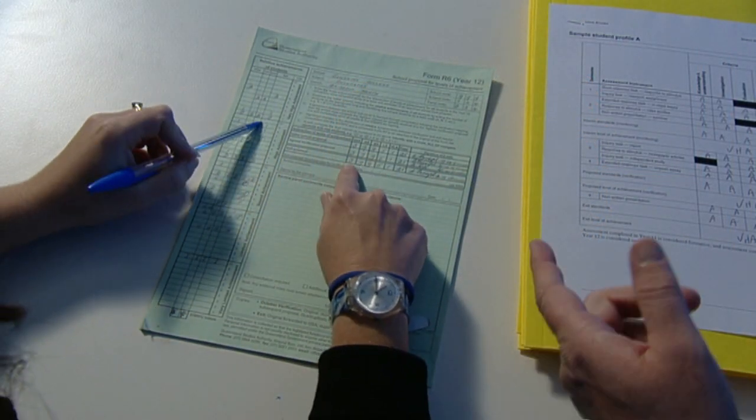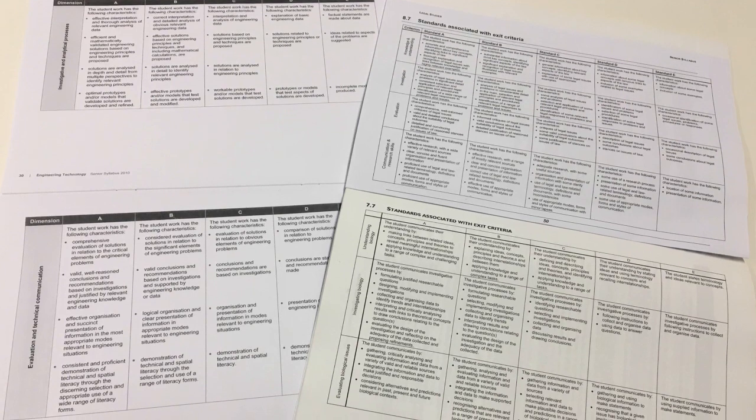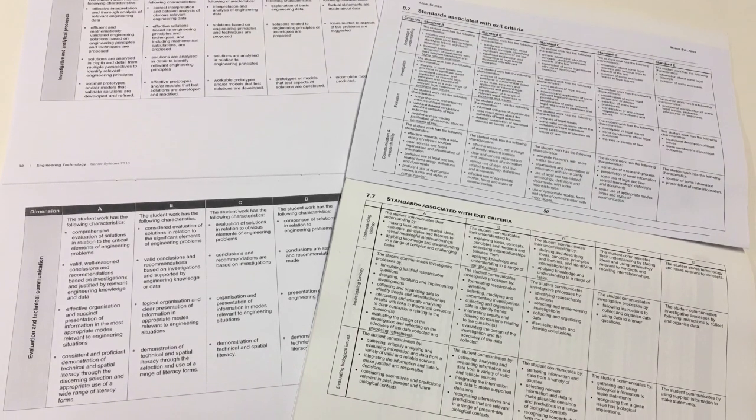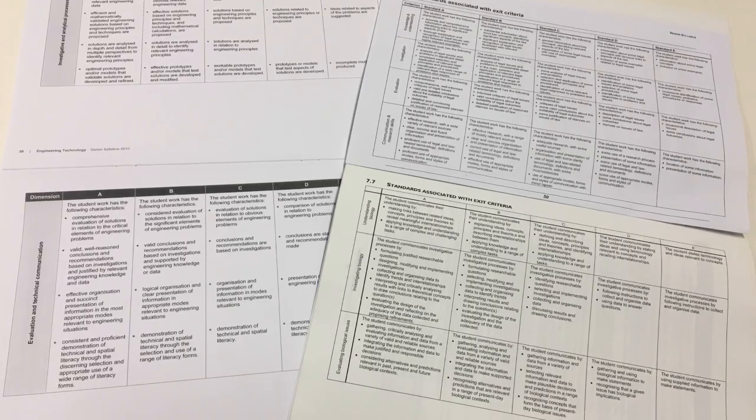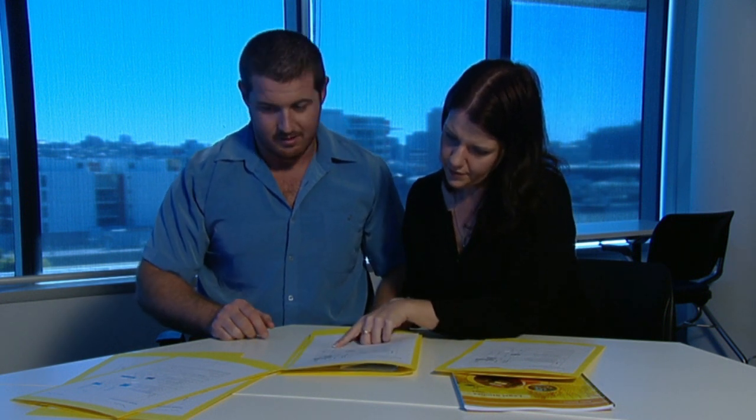As part of the verification process at the end of Year 12, teachers must complete a Form R6. They make decisions about student achievement based on the evidence they have from assessment tasks, comparing student performance to syllabus standards. SAIs are assigned after the verification process has taken place. Sometimes teachers ask why they have to assign SAIs when they've already completed the verification process. SAIs allow for much more fine-grained decisions about the differences between student work, which is what we need to calculate OPs.